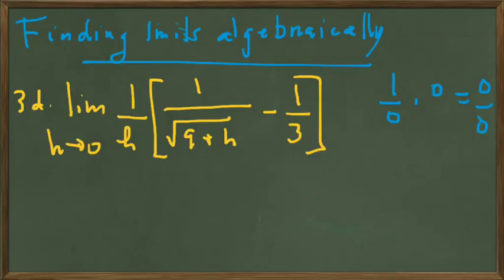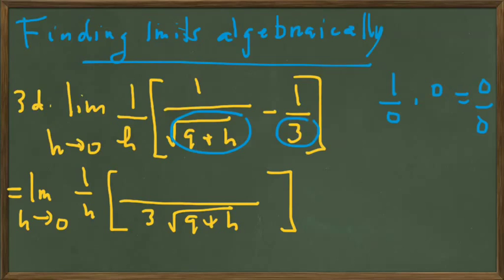The first of those approaches is to get a common denominator in this bracketed expression. So let's set it up with that in the next line with the common denominator being the product of 3 times the square root of 9 plus h. So we have the common denominator written in, and we're going to see that this one needs to turn into a 3, and this one needs to turn into a square root of 9 plus h.